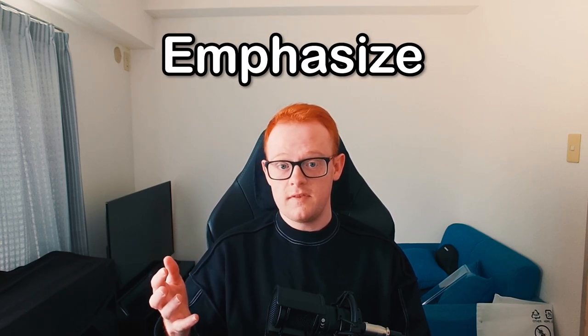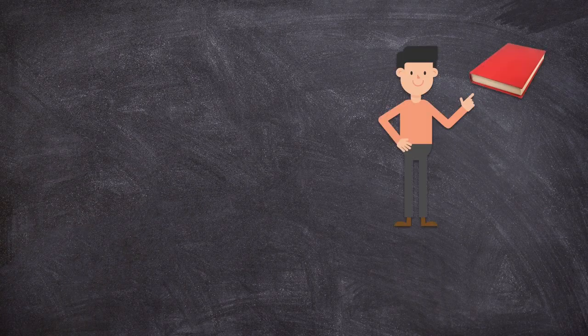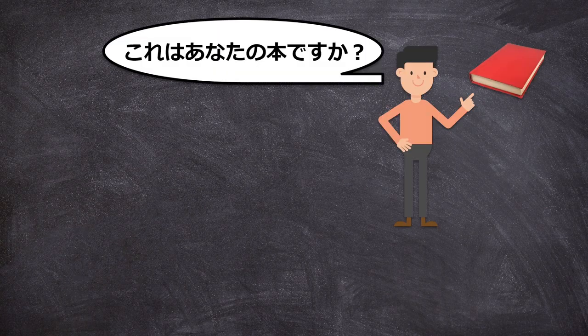Now that we have the basic functions of wa and ga down, let's learn how to use each of them in a sentence. When using wa and ga in a sentence, it's extremely important to discern how each is used depending on the context and situation. The most common usage of ga that you probably know is using it to emphasize something or someone. For example, if someone is pointing to a book and asking you if this is your book — これはあなたの本ですか?